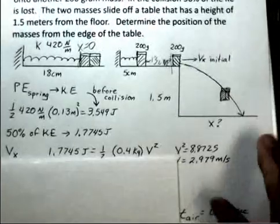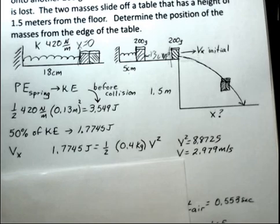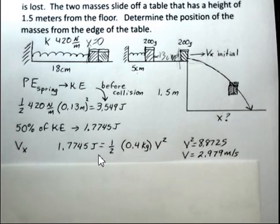Okay, let's go a little further. We want to know the velocity in the x direction. So the kinetic energy, the remaining kinetic energy, 1.7745 joules, is now the kinetic energy of the two objects together. So 200 grams, 200 grams, that's 0.4 kilograms. 1/2 mv squared being used here.